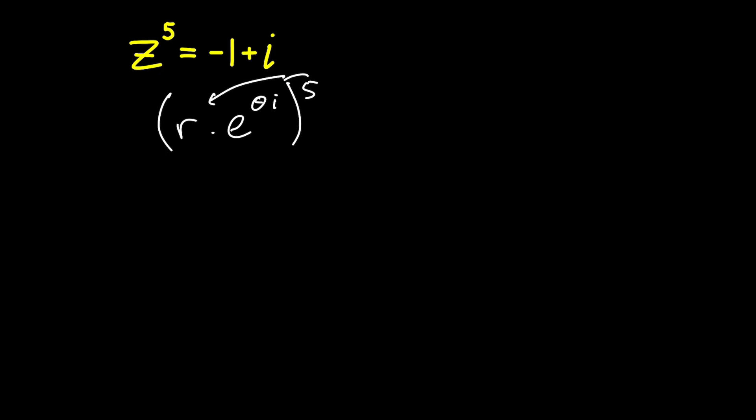So distributing the five, we get r to the power of five times by e to the power of five theta i.